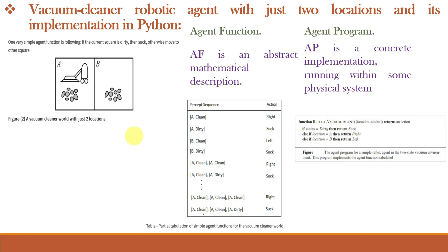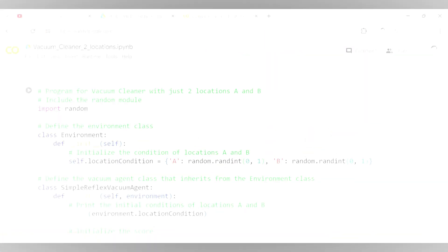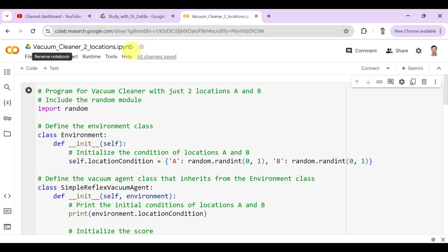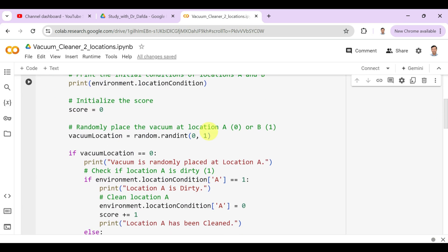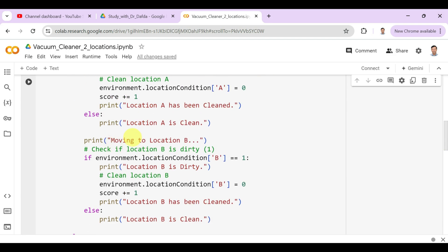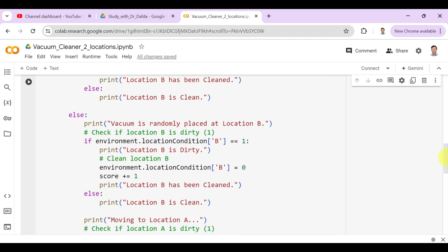Let us implement this vacuum cleaner robotic agent with just two locations in Python programming language. This is the Python program for vacuum cleaner with just two locations A and B. The import random statement in Python is used to include the random module in the program. This module provides functions to generate random numbers and perform random operations. So it will choose the locations randomly A or B and even randomly as clean or dirty. The environment class initializes two locations A and B with random cleanliness, where we choose 0 for clean and 1 for dirty. The SimpleReflexVacuumAgent class inherits from environment, randomly places the vacuum at location A or B, checks the cleanliness of the current location and cleans if it is dirty, updating the score and moves to other location B, checks and cleans if necessary. And finally, it prints the state of both locations and performance score also.